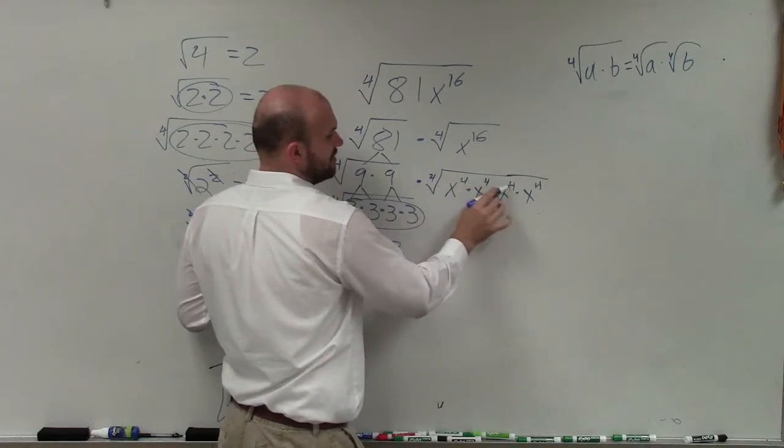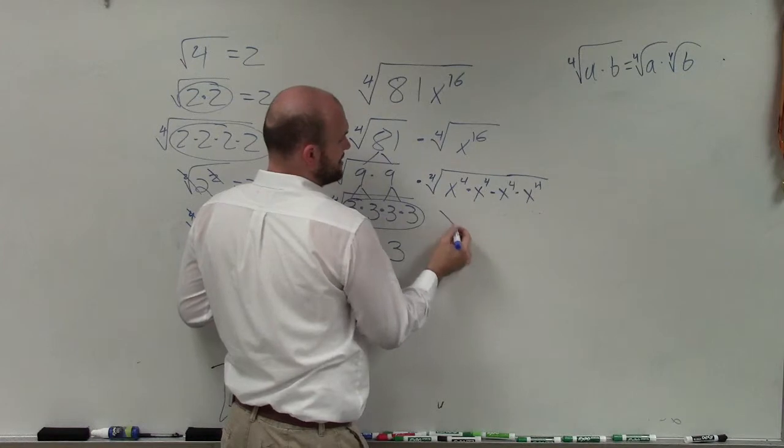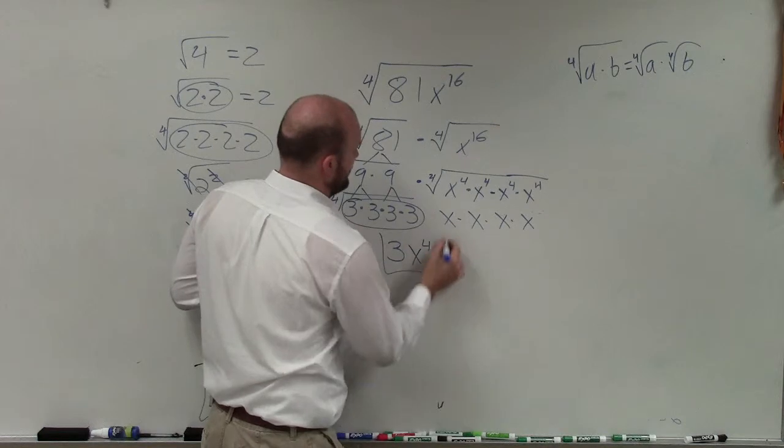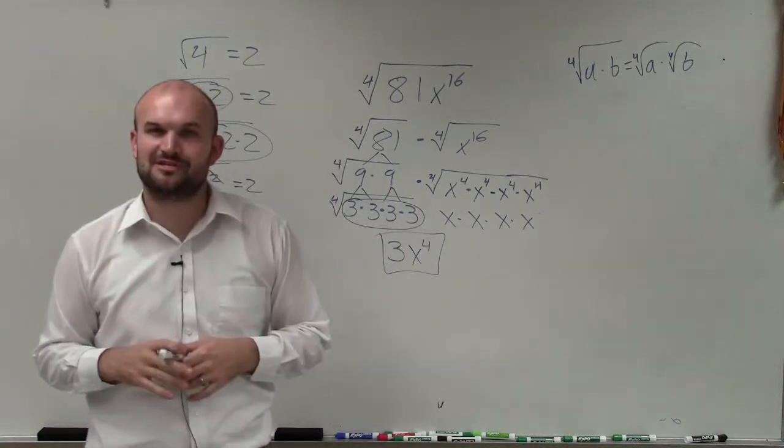And then I can take the fourth root of each of these individually. So then I'm just left with x times x times x times x, which is x to the fourth. And that will be my final simplified expression. Thanks.